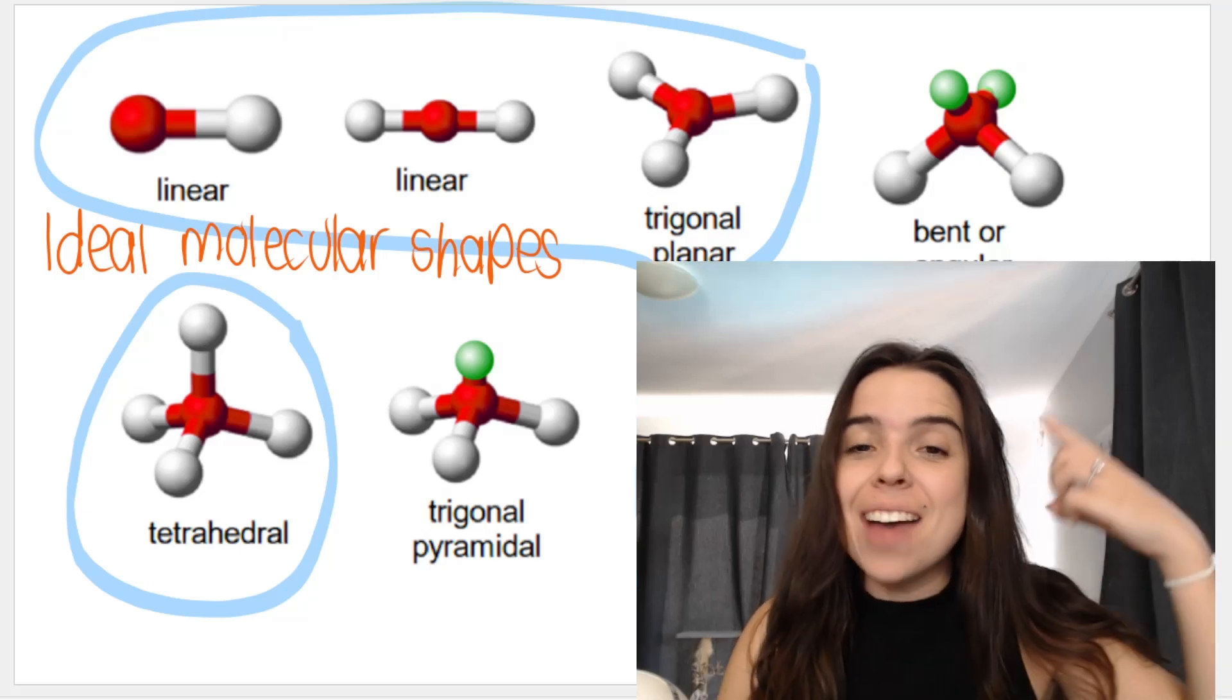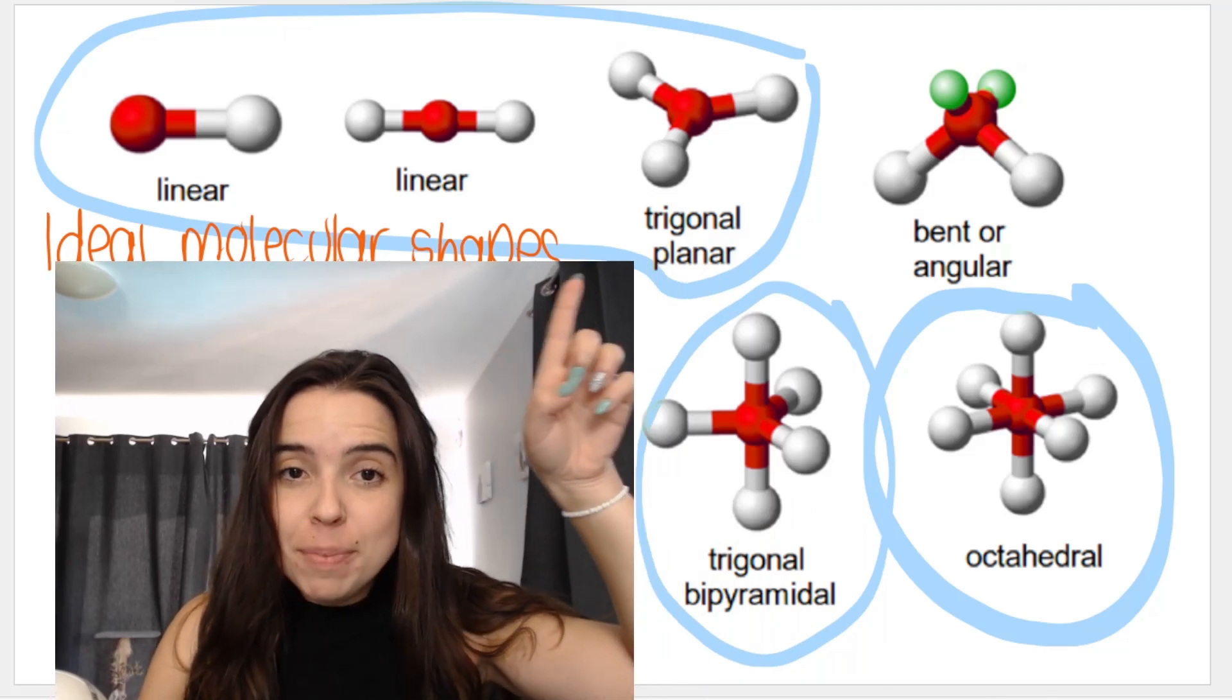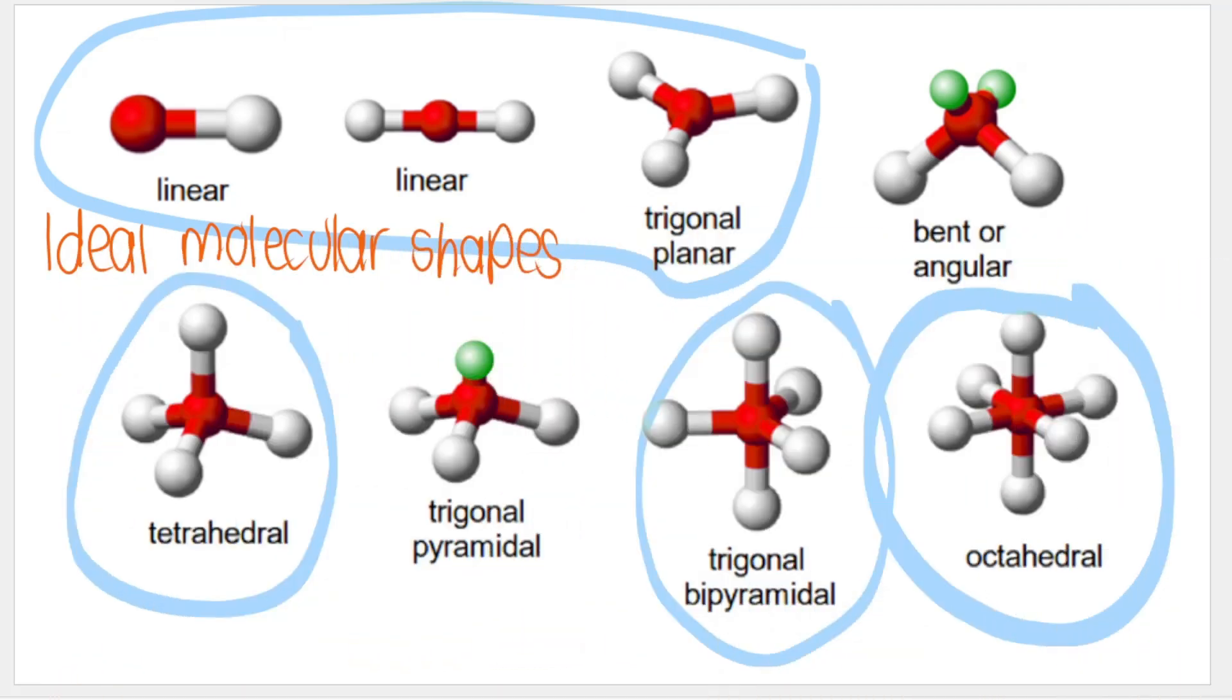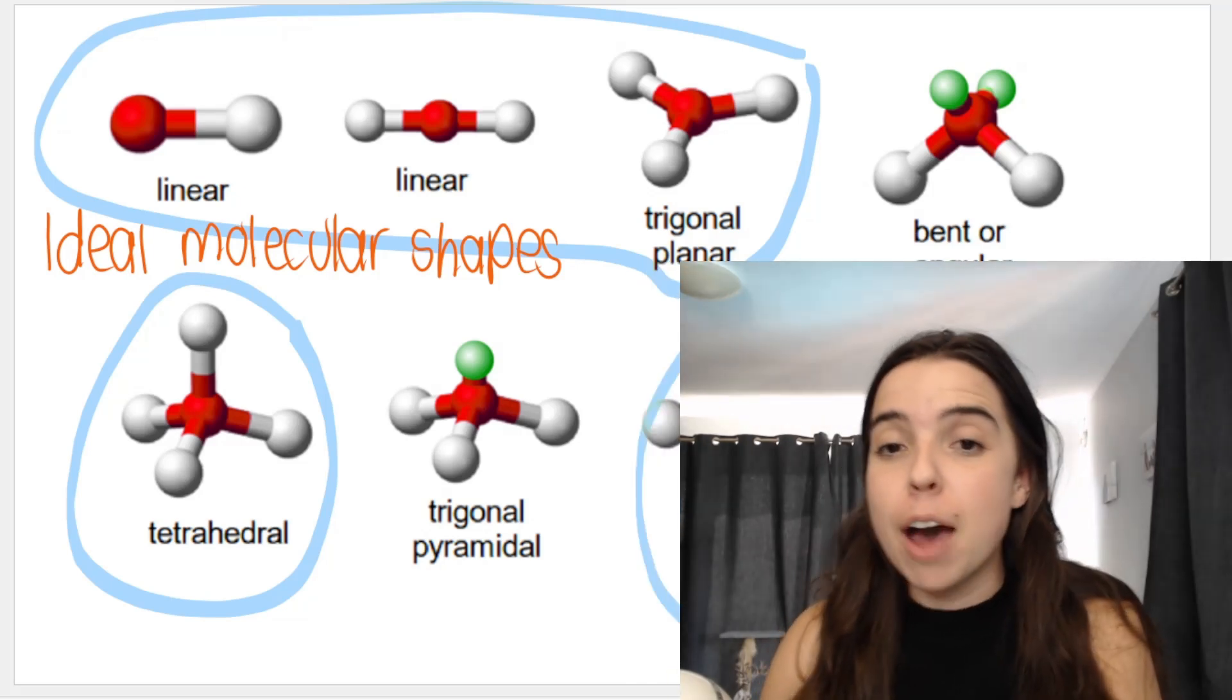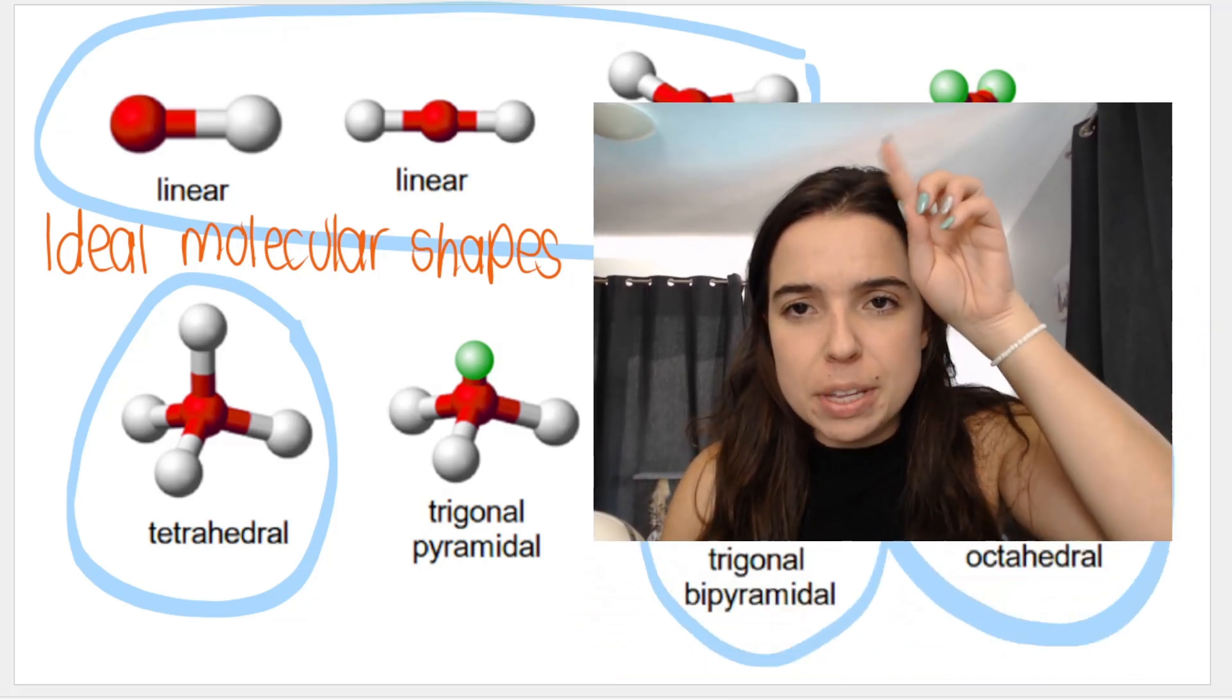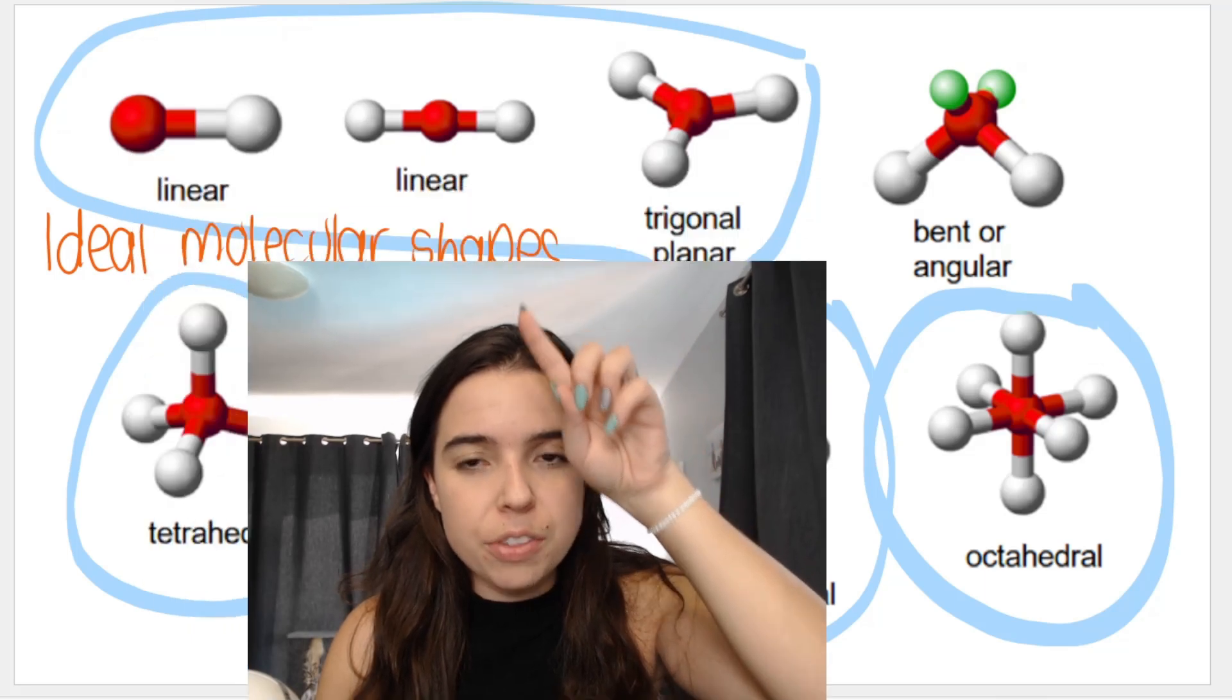In the previous video we looked at the different molecular shapes. We broke them down into ideal molecular shapes, which are the ones that I've circled, and the non-ideal molecular shapes, which are the ones that I have not circled. We described the difference as being the ideal molecular shapes have no lone pairs on the central atom.